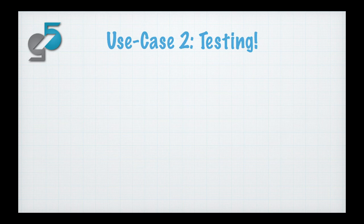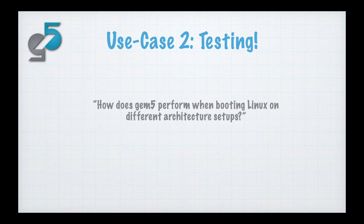Our second use case is testing. If you've got an architectural design, you're going to need to test it, and you're going to test it a lot — that is, lots of runs of GEM5. Also within the GEM5 project, for a release of GEM5, we want to make sure that there are no bugs. So we also test a lot using a variety of architectural setups. The question we're asking is: how does GEM5 perform in booting Linux on different architectural setups? This is a very common test in GEM5, but also a common test for users.